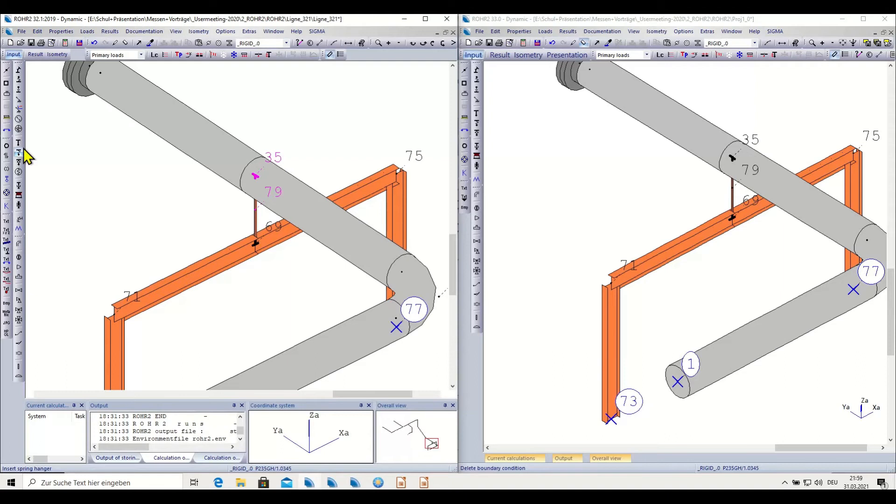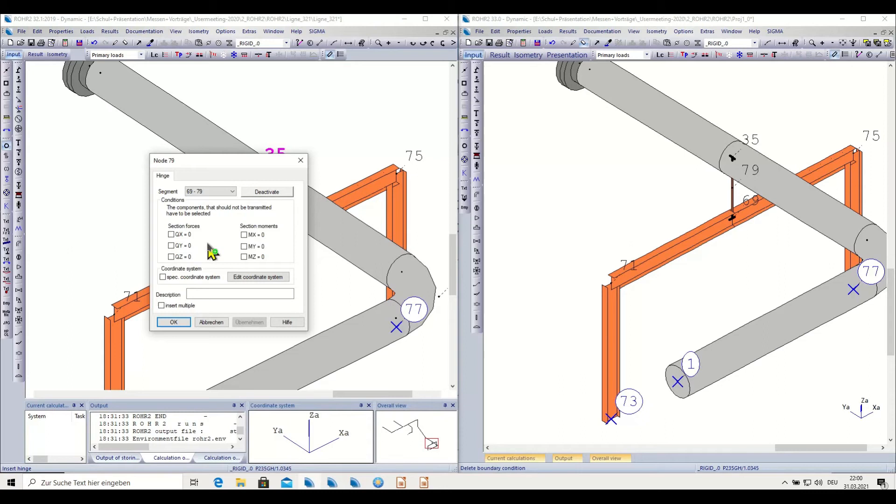So if I have a look in the split screen mode here, I have now connected my structural steel with the rigid element to the pipe, and I want to model the connection first of all with the hinge. So I select the hinge symbol, I click on the node where I want to introduce it, and I have to select all the parts that are not coupled. So I would have to check these combinations and only keep the QZ coupled here. This would be the linear hinge.